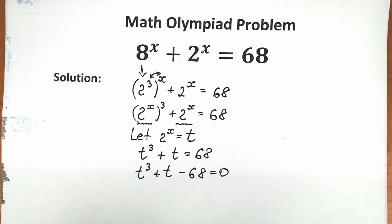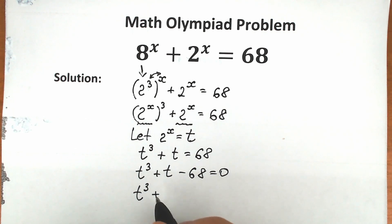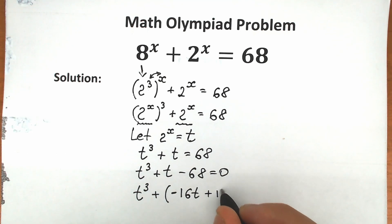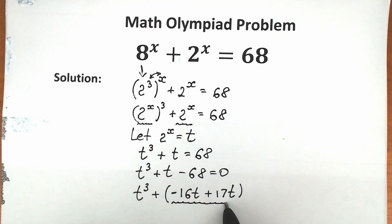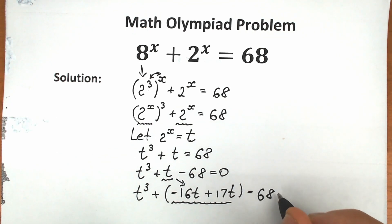Let's solve this interesting equation. There are a lot of approaches, but I want to show you a really great trick. Instead of just t, let's write minus 16t plus 17t — which is absolutely the same as t. This changes nothing, but it helps us a lot. So we have t cubed minus 16t plus 17t minus 68 equals 0.